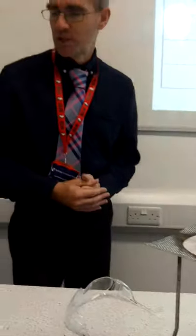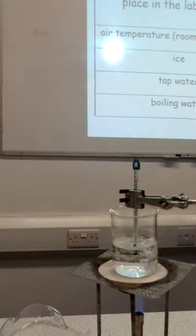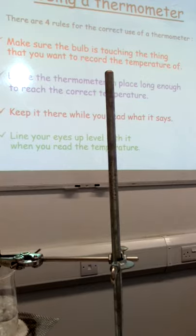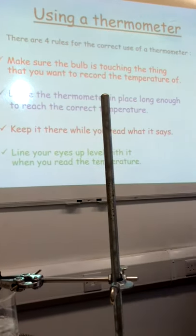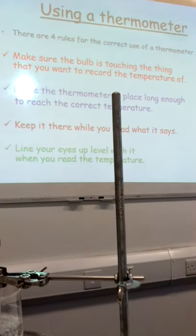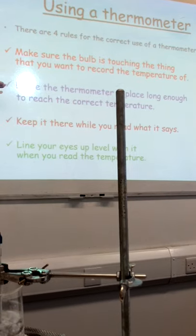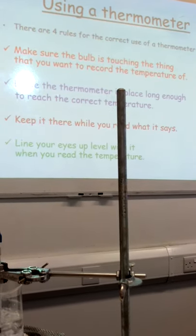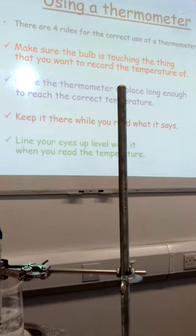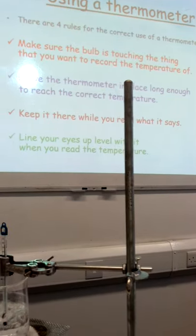So, the rules for using a thermometer are to make sure that the bulb is always touching the object that you want to record the temperature of. You leave the thermometer in place for long enough. You keep it there while you read what it says. And make sure you line your eyes up level with it. Okay, thank you, everybody.